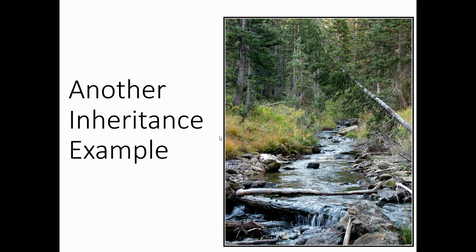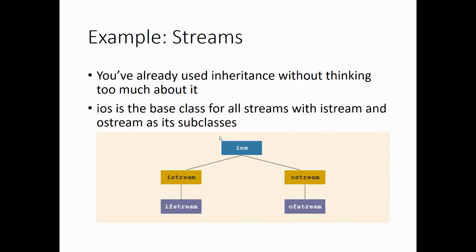Another inheritance example in C++ is streams — you've already used streams with #include <iostream> without thinking too much about them. iOS is the base class for all streams, with input stream and output stream as its subclasses. Then you can have things like input file stream and output file stream that are subclasses of those input and output streams.